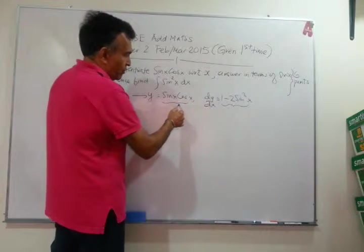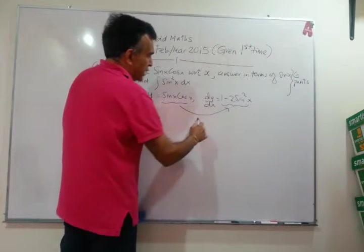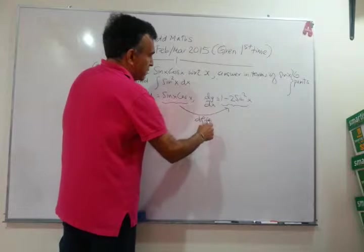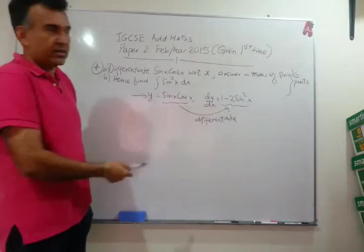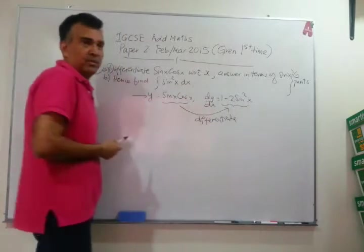Let's make a couple of notes here to help us along. When you differentiate sine x cos x plus x, you will get 1 minus 2 sine squared x.